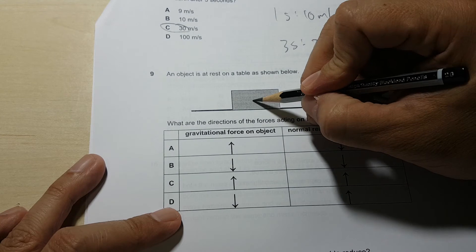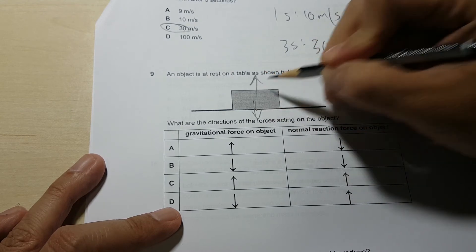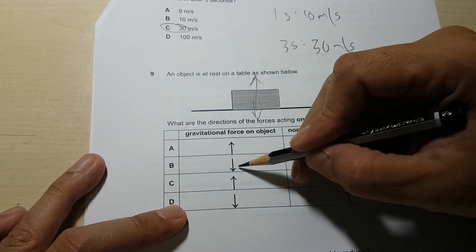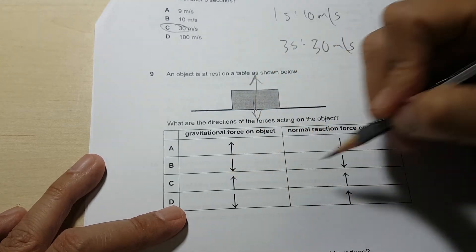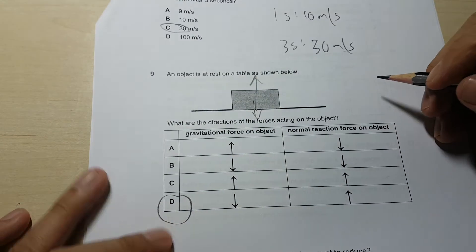Question 9, gravitational force, basically the weight that will be going down. The normal reaction on the object will be going upwards. So one is down, one is up. So answer for question 9 is D.